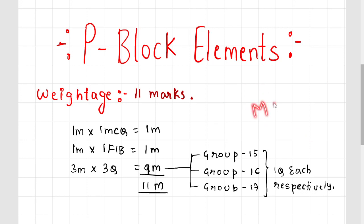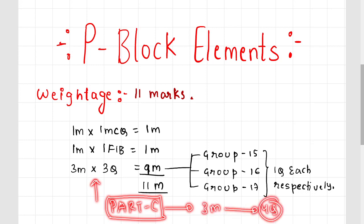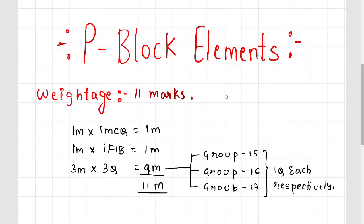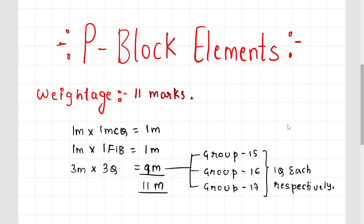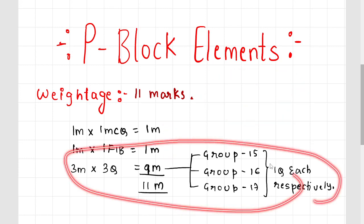If you have a model question paper, just message me and I will do that video. A very important thing: 3-mark questions — 3 questions — it's a huge weightage. Let's look at Part C: that is 3-mark questions. You will have 4 questions, but only 3 questions are asked from this chapter itself. So it's quite an important chapter. The 18th group elements students — questions will be asked from groups 18 and 17.